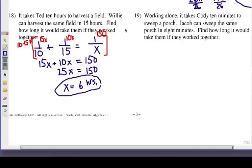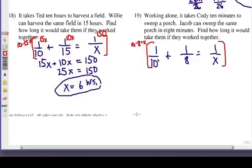Now, number 19. Working alone, it takes Cody 10 minutes to sweep a porch. Jacob can sweep the same porch in 8 minutes. How long would it take them if they worked together? Well, what's the equation going to look like? Cody, 1 over 10. And Jacob is 1 over 8. Together, we don't know, so we'll call that 1 over x. Your common denominator is going to be 10 times the 8 times the x. Now that may not be the smallest common denominator I could use, because I have a common factor of 2 there between the 10 and the 8. But again, this is kind of a shortcut.